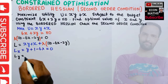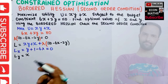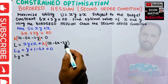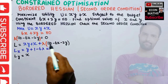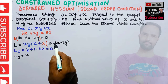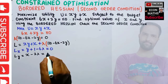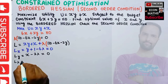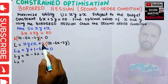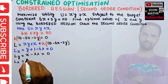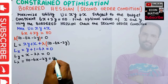Taking the partial derivative with respect to y: in the first term xy, the derivative gives x; the second term has no y so its derivative is 0; in the constraint term the derivative of y gives −2λ. So Ly = x − 2λ = 0. Taking the partial derivative with respect to λ gives the original constraint: 110 − 6x − 2y = 0.